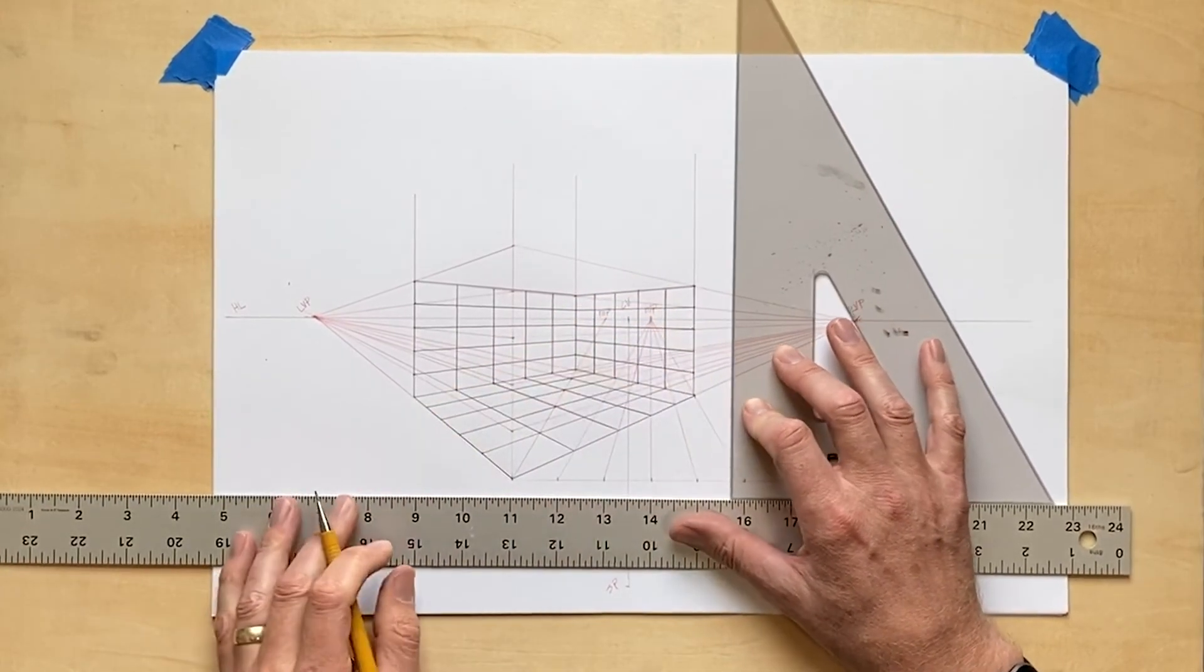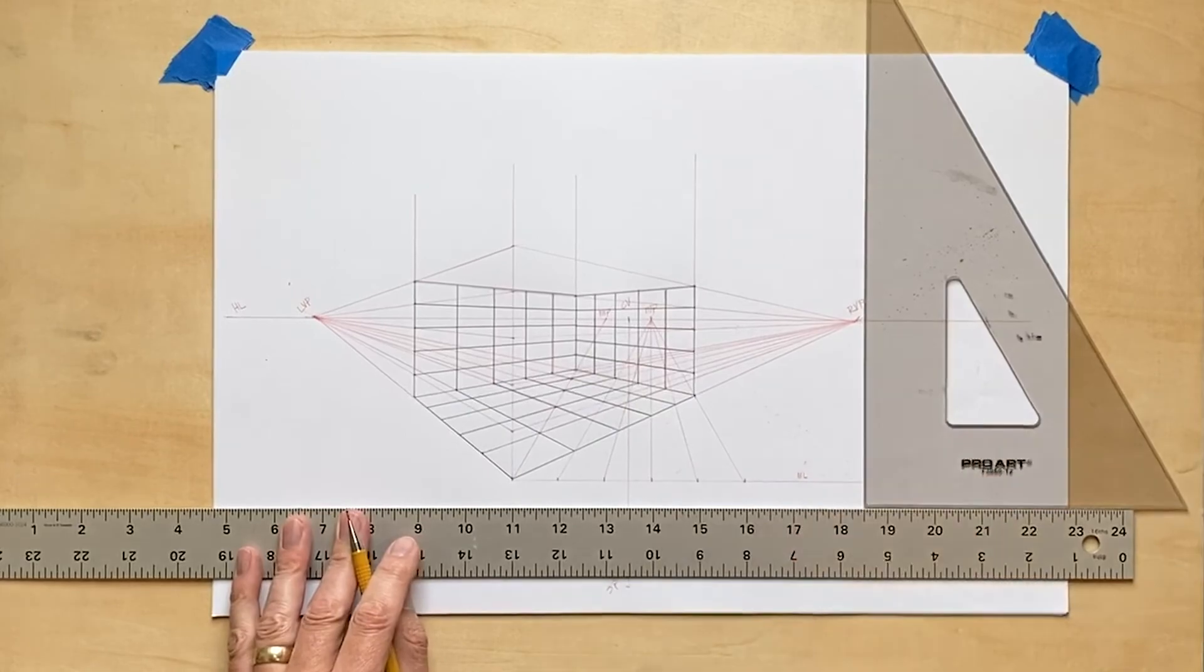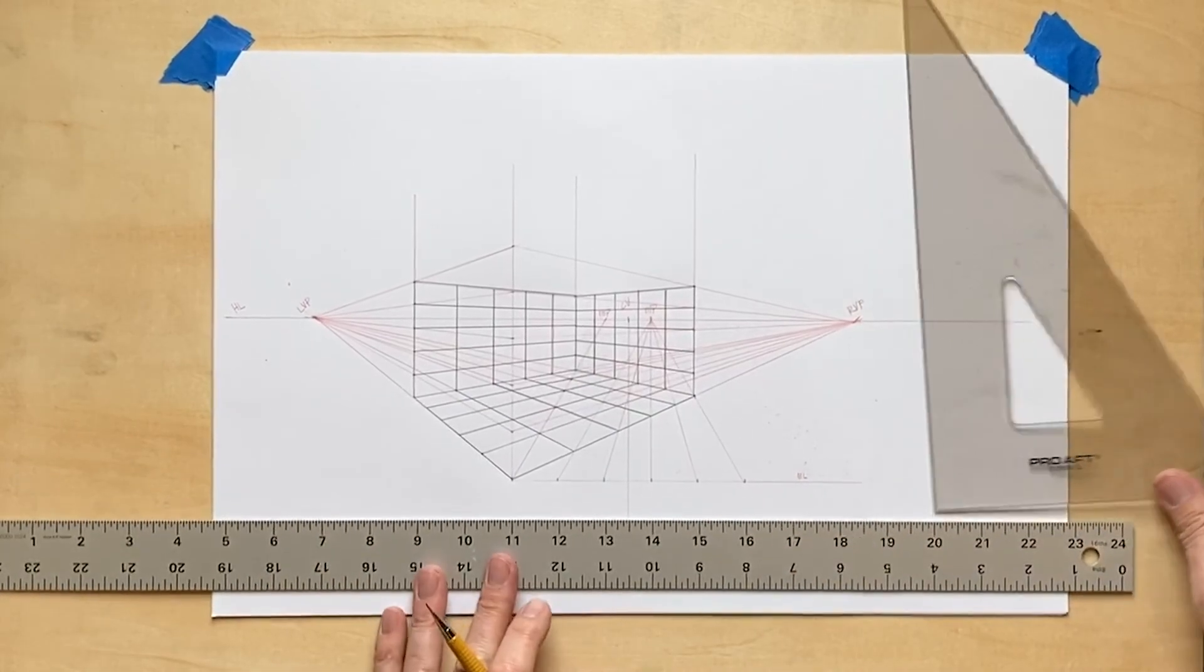And there you have it, gridded wall planes for a gridded floor plane. Thanks for watching, everybody.